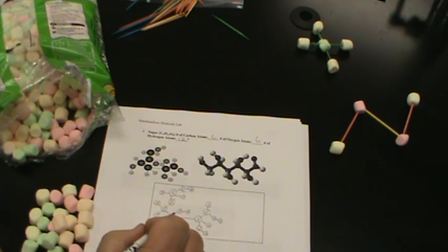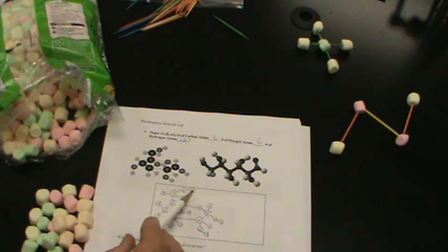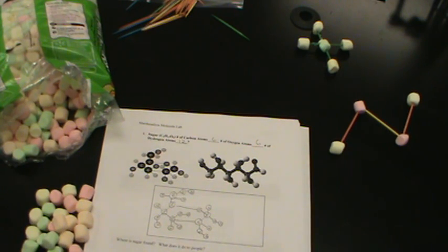And almost there. And from, where was it? Here. We come over and there's an O. And then we come down. And so there it is. We have one, two, three, four, five, six carbons. One, two, three, four, five, six oxygens. One, two, three, four, five, six, seven, eight, nine, ten, eleven, twelve hydrogens.